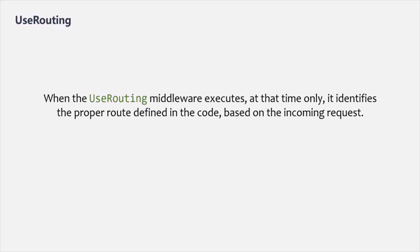Because of that, when we call the user routing middleware in the application request pipeline, it identifies the incoming URL and the available endpoints defined in the code. It then tries to match the incoming URL with all available endpoints, and selects the most appropriate one based on the matching URL and the HTTP method.